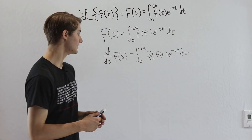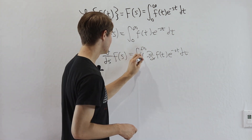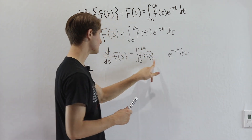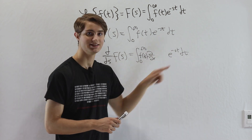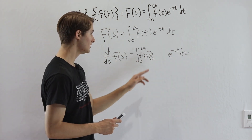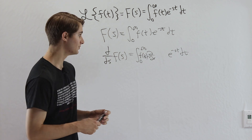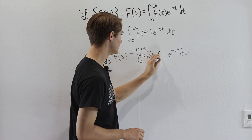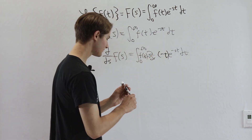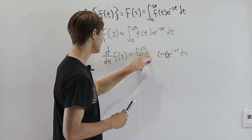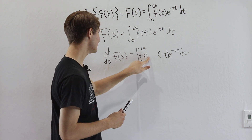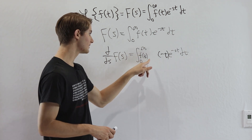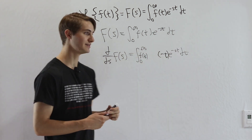Since f of t is treated as a constant, we can bring it to the outside. We're just looking at the derivative with respect to s of e to the negative st. By the chain rule, that gives e to the negative st, and the derivative of negative st with respect to s is negative t. So the derivative with respect to s of F(s) equals the integral from 0 to infinity of f of t times negative t times e to the negative st dt.